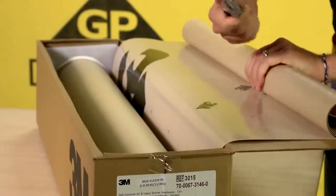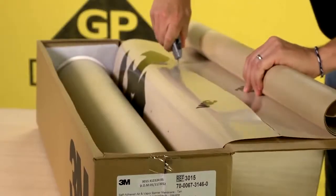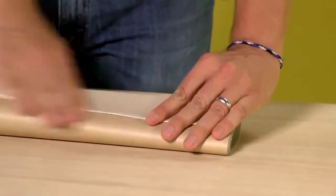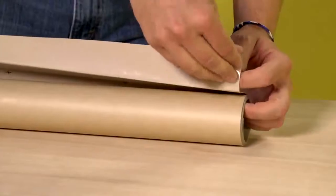Unroll and cut your next length as required for the application. As you did previously, wind the roll and fold back the liner to start the strip.